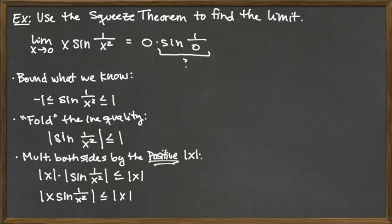Okay, so we're getting closer because now we do have – it's in absolute values now, but we do have the entire function we are trying to take the limit of. And so here's what we do next. We folded an inequality, so now we're ready to unfold it. So unfold the inequality.